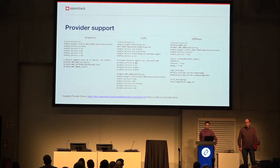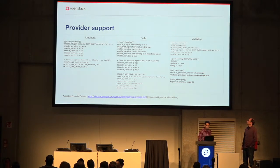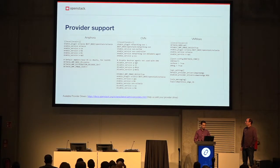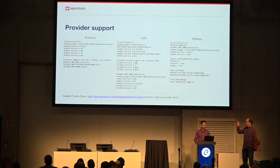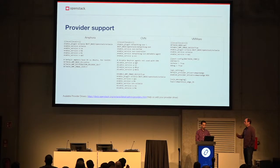This slide shows DevStack configuration options for running with the Amphora driver enabled, the OVN driver which is a new provider, or VMware. These are the three drivers we know exist that people can start playing with. OVN is coming with Stein — some patches landed in Rocky, but the usable version will probably be Stein.